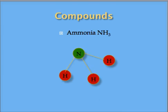Ammonia is a compound made of one nitrogen atom and three hydrogen atoms. A compound is a molecule that is made up of at least two different elements.